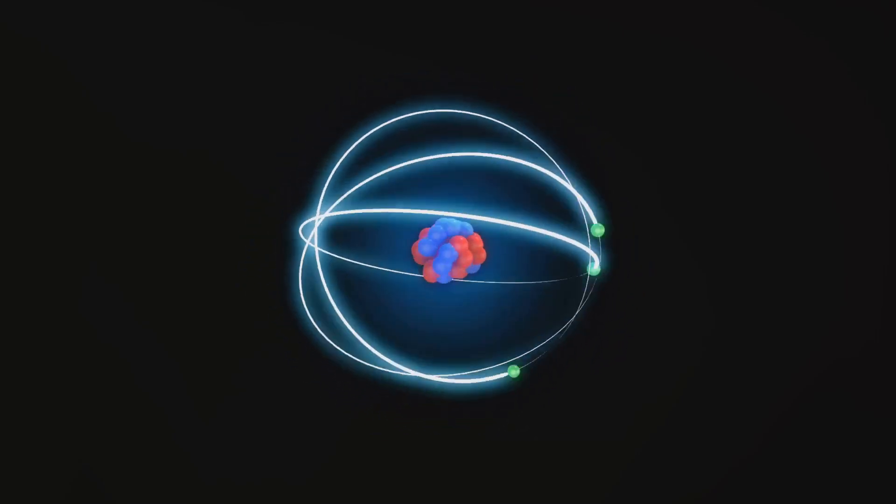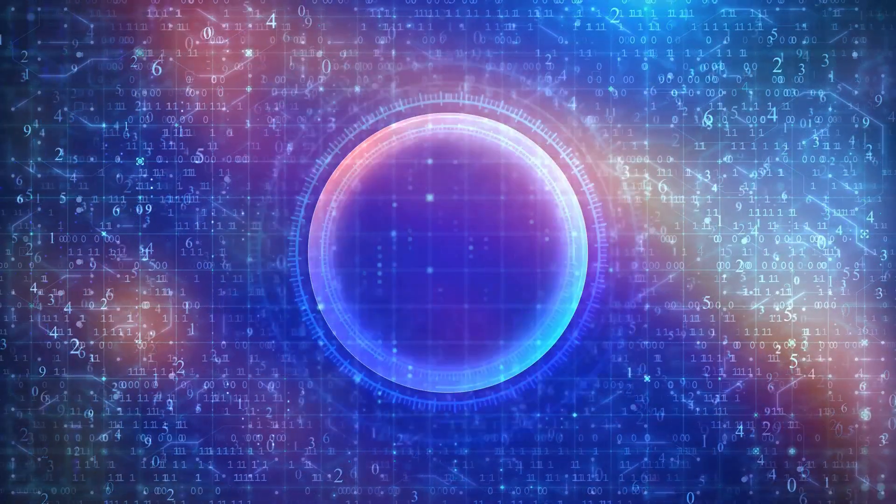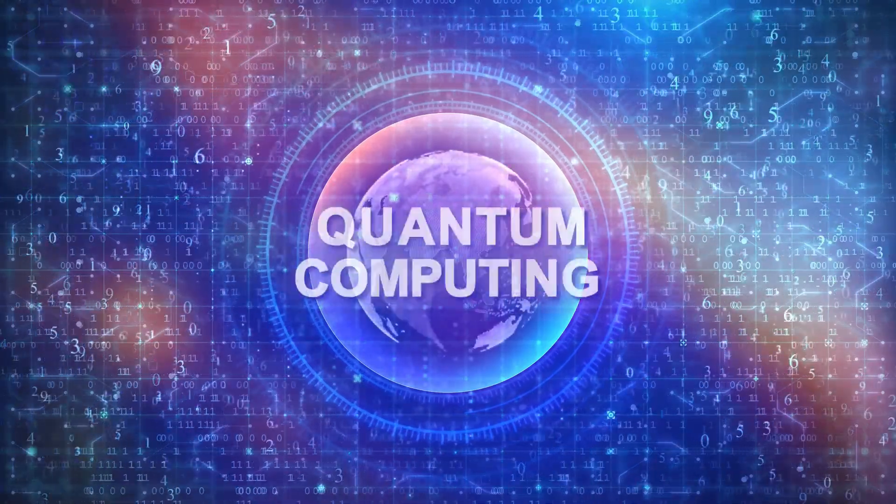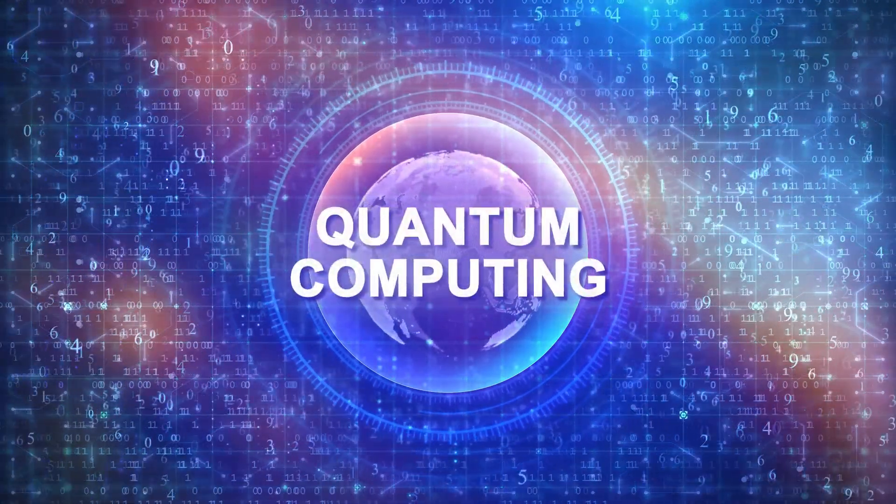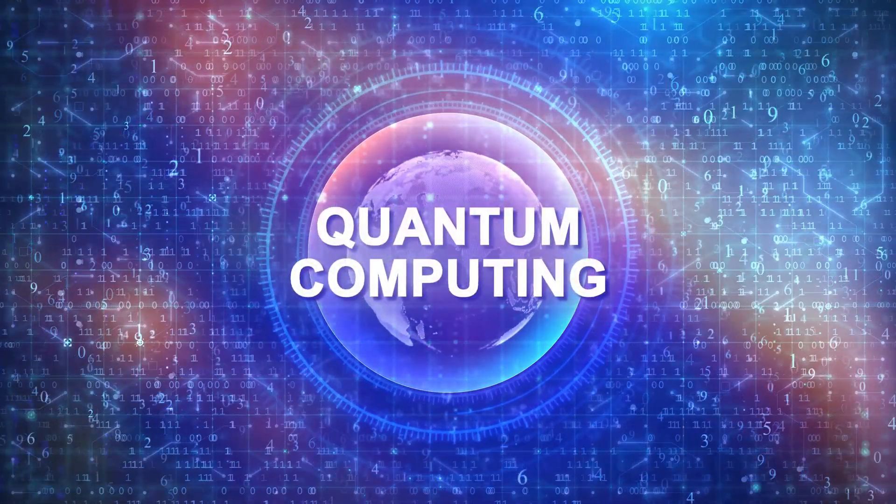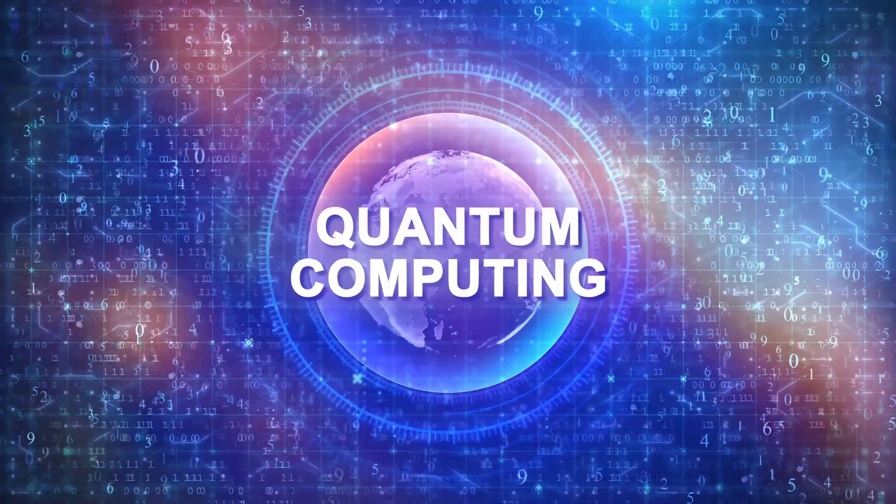But here's where things get peculiar. According to quantum superposition, an electron isn't just spinning up or down. Instead, it's in a superposition of both states, spinning both up and down at the same time.